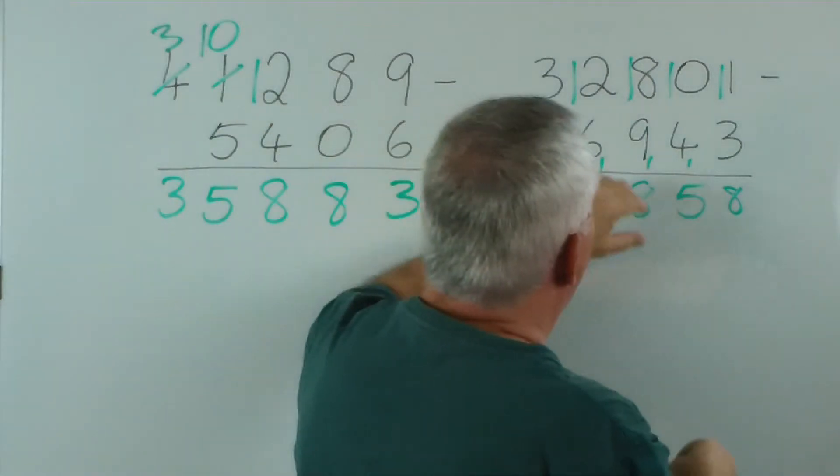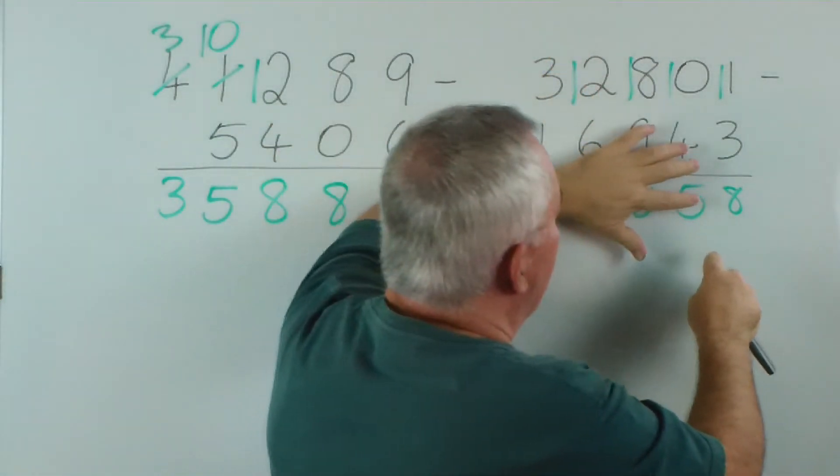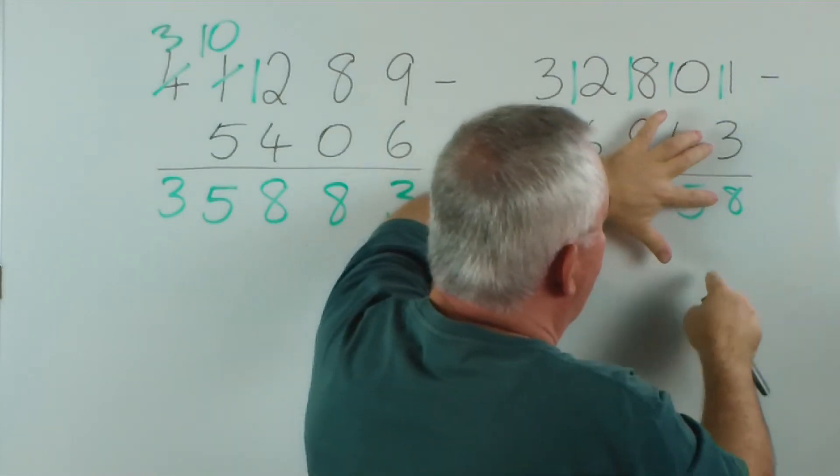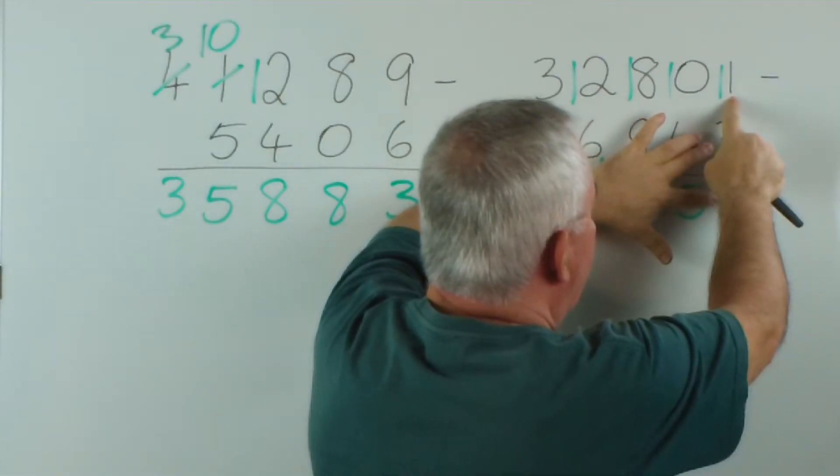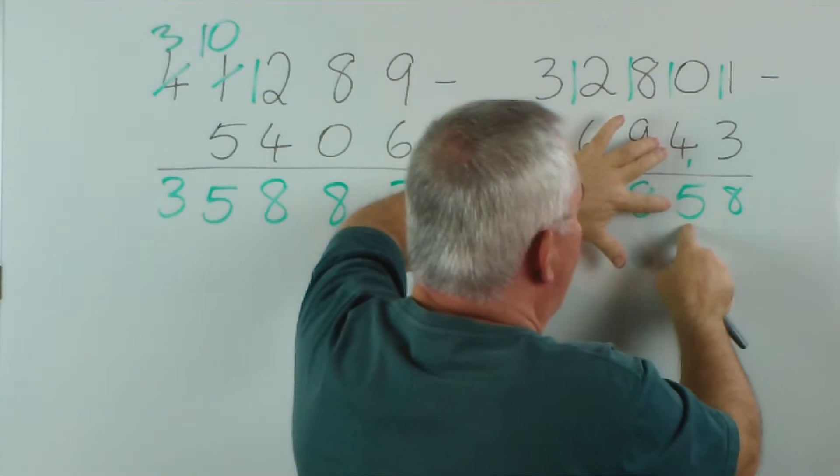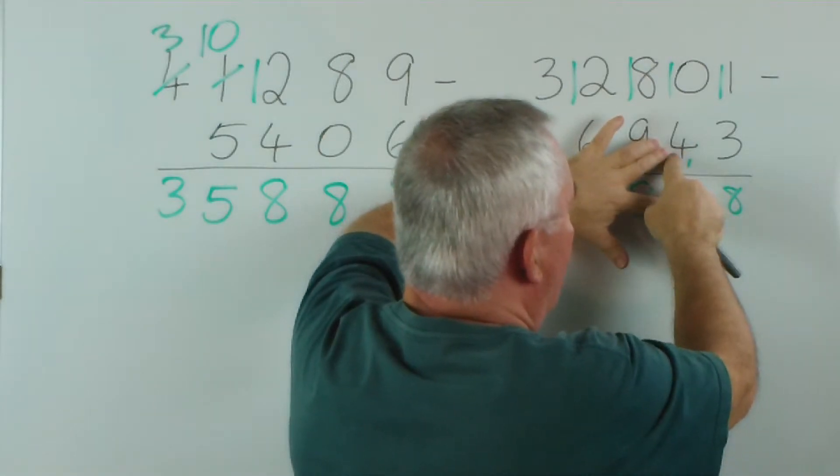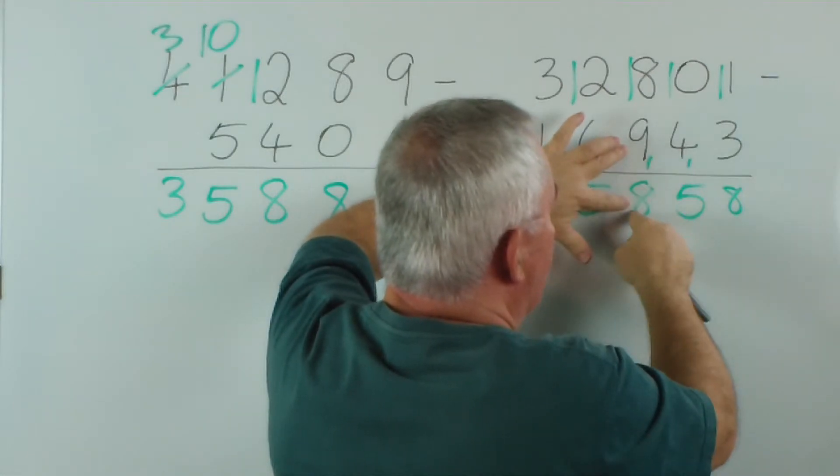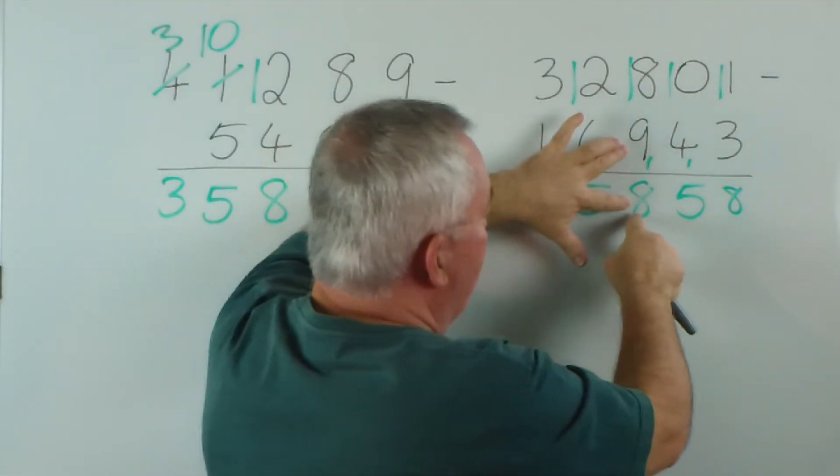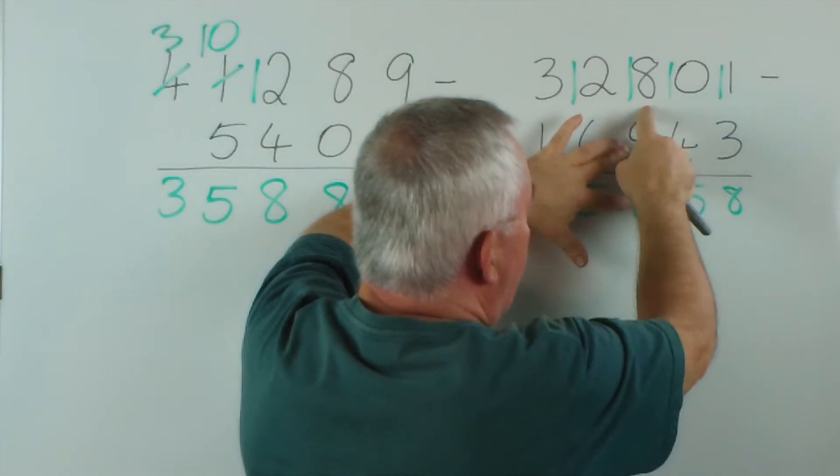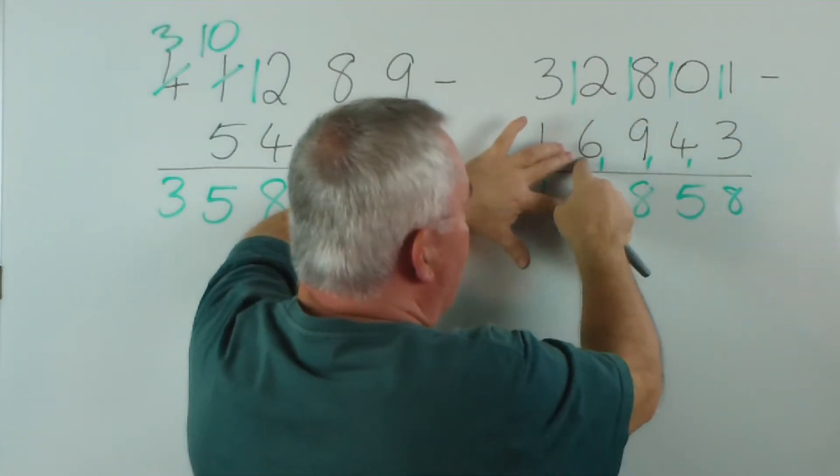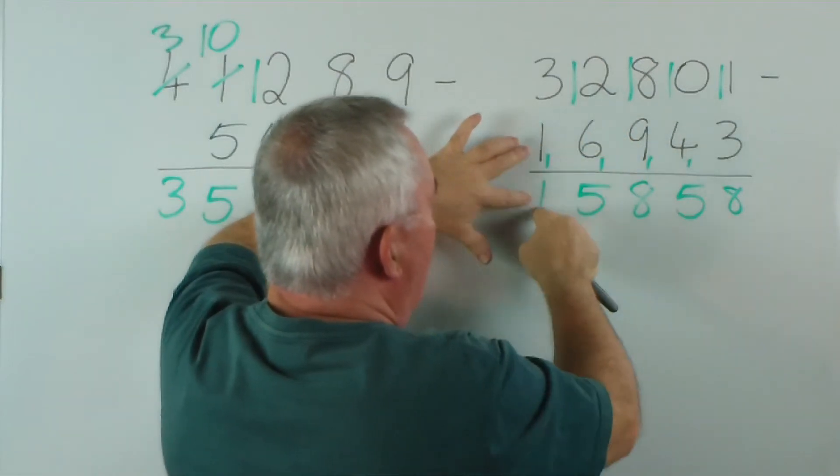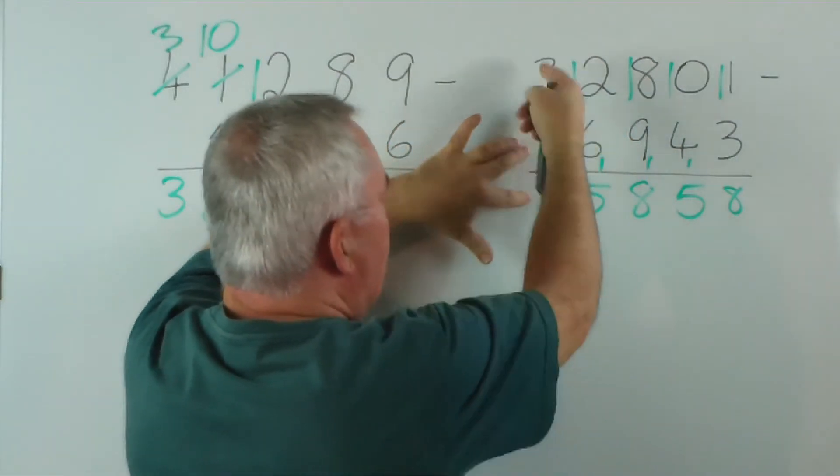Over here... trying to ignore the green... so we're just trying to get these black numbers at the top. Let's add... 3 and 8 is 11... there's our 1... carry the 1. 5 and 4 plus 1 is 10... carry the 1. 9 plus 8... plus 1... is 9 plus 9 is 18... there's the 8... carry the 1. 6 plus 5 plus 1 is 12... carry the 1. And 1 plus 1... plus 1 is 3.